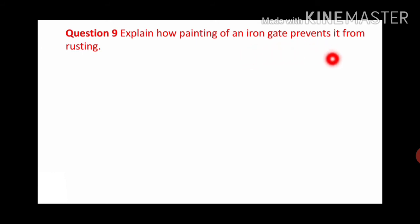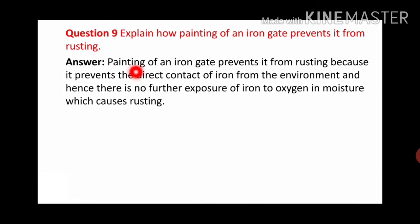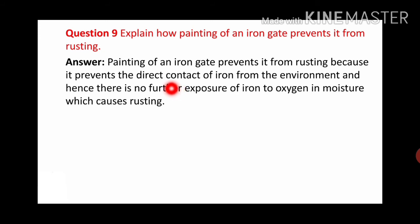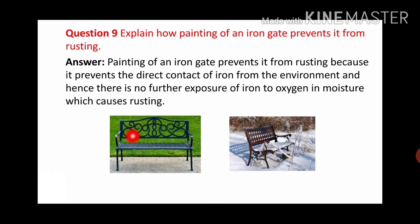Next question: explain how painting of an iron gate prevents it from rusting. Answer: painting of an iron gate prevents it from rusting because it prevents the direct contact of iron with the environment, and hence there is no further exposure of iron to oxygen and moisture, which causes rusting. If we paint on an iron gate, iron and oxygen will not come into direct contact. If iron and oxygen and moisture from the atmosphere do not come into contact, there will be no rusting. Here you can see this part is painted, so there is no rusting, while where there is no paint, there is a lot of rusting.